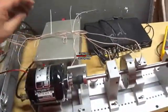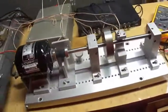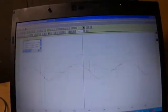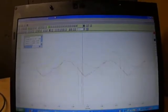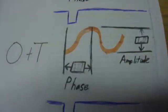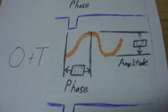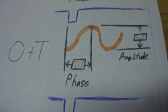Now that my trial weight is installed, I'm going to go ahead and start my rotor kit up again. I'm going to get data for the O plus T run. Go ahead and let it ramp up. The result I got for my O plus T was phase of 227 degrees and amplitude of 1.0 mils.